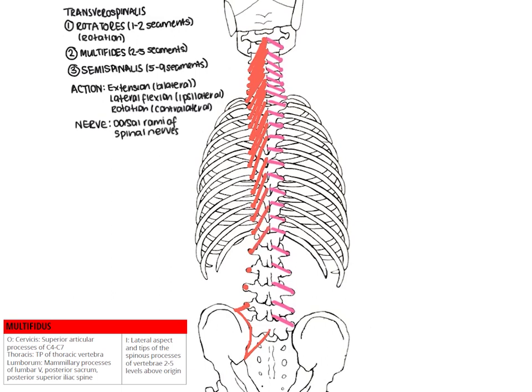The multifidus fascicles are quite long. Collectively as a group, when they contract they will extend the lumbar, thoracic, or cervical spine, and ipsilaterally laterally flex or contralaterally rotate.